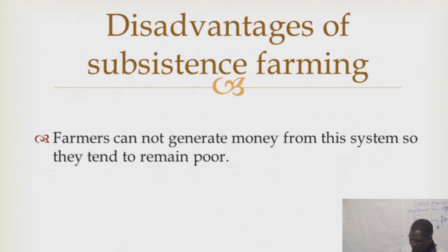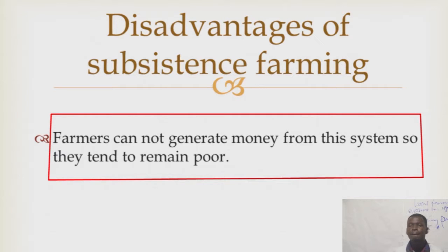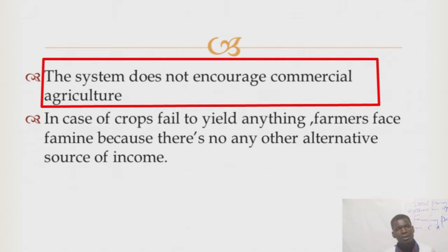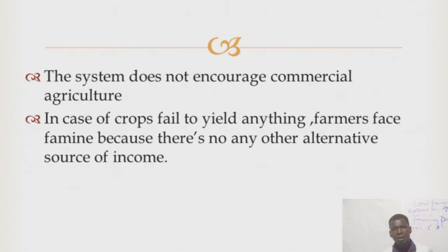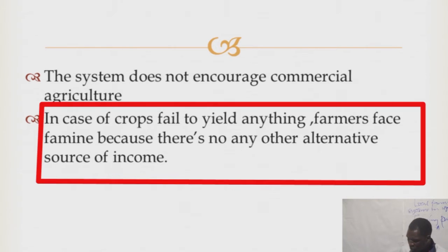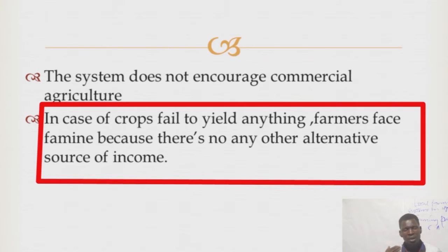Disadvantages of subsistence farming: farmers cannot generate money from this system, so they tend to remain poor. The system does not encourage commercial agriculture — the government is trying to fight against subsistence farming and move farmers toward commercial farming, but subsistence farming limits this transition. Also, because the farmer grows crops only for own consumption, if the crops fail, the farmer faces famine.